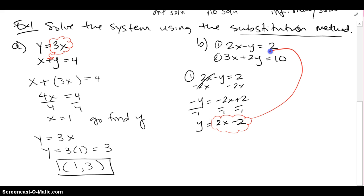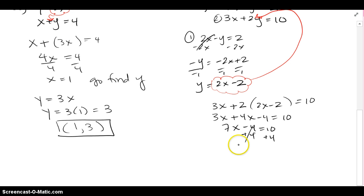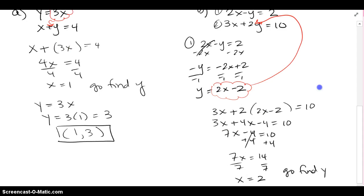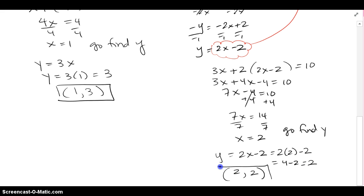Now I take this y and plug it into equation 2. I have 3x plus 2(2x minus 2) equals 10, which becomes 7x minus 4 equals 10, giving 7x equals 14, so x equals 2. Going back to find y by plugging x equals 2 into the isolated equation gives y equals 4 minus 2, which is 2. So these two lines intersect at (2, 2) — it is a consistent system.